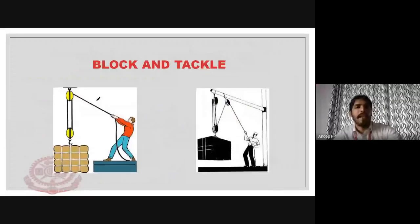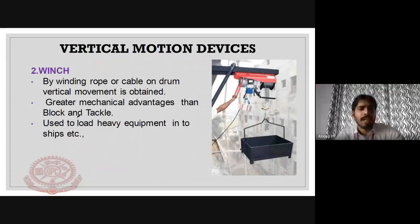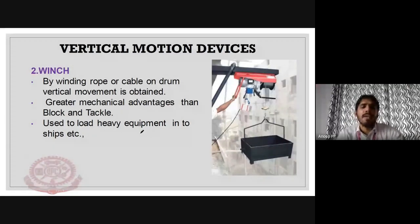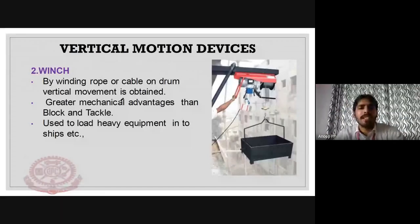The second vertical motion device is the winch mechanism. By winding a rope or cable on a drum, vertical movement is achieved. It provides a greater mechanical advantage than block and tackle and is used to load heavy equipment into ships.